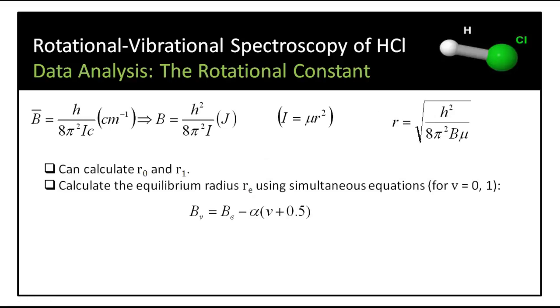The next step is to use these rotational constants to get some physical data. First up is the radius of the HCl bond in the ground and first vibrationally excited state. Knowing B0 bar and B1 bar, we can use the equation from earlier and calculate it in joules. Mu in this expression is the reduced mass of HCl. The equilibrium radius can then be calculated.